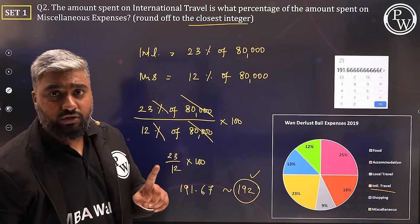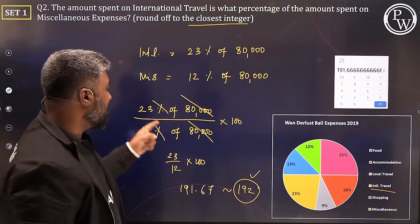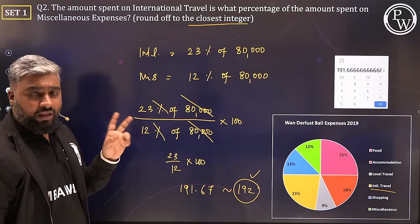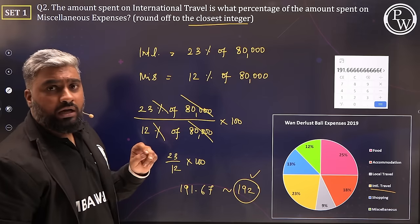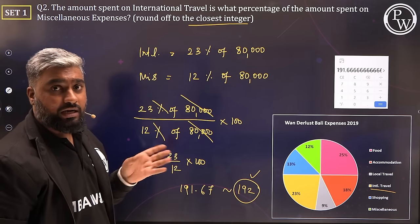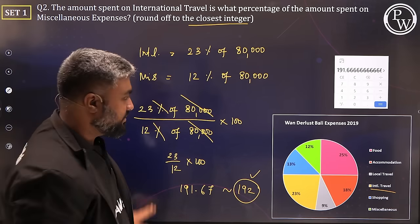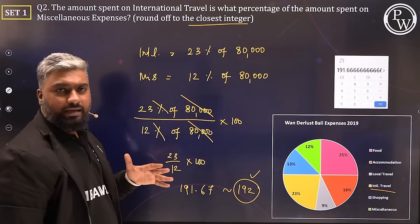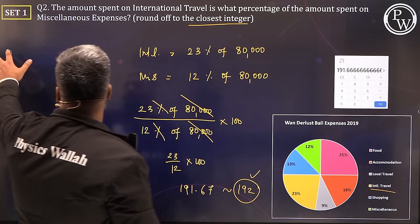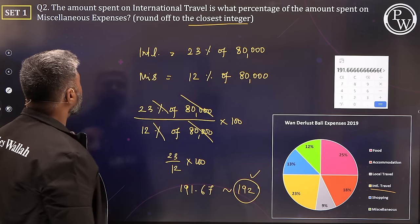So the right answer is 192. The trap answer is 200 — if you make the approximation mistake — and 191 is also a trap. Always round to the closest integer. Done. Beautiful. Let's move to the next question.